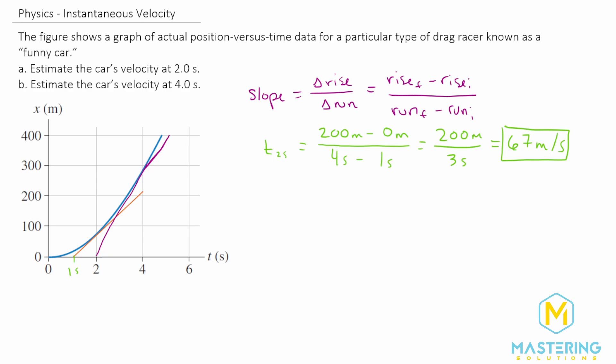So now we have v at four seconds. The rise here is going to be 400 meters for the final minus the initial of zero meters. And then that's all divided by—that's basically five seconds—so five seconds minus two seconds. So now we have 400 meters for the numerator divided by three seconds for the denominator again.